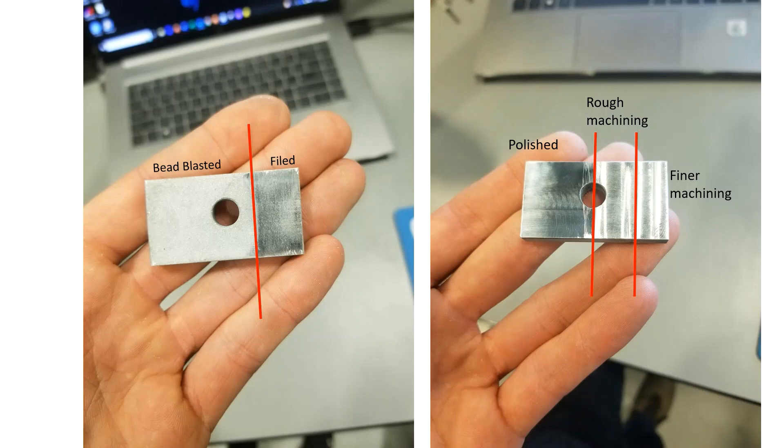One side I bead blasted the surface with fairly coarse media and then used a fine file on a section of that same side. On the other side I did rough machining, then sanded and polished half of it, and then did some finer machining on the other edge. I will discuss these surface finishes in more detail later with accompanying SEM images.